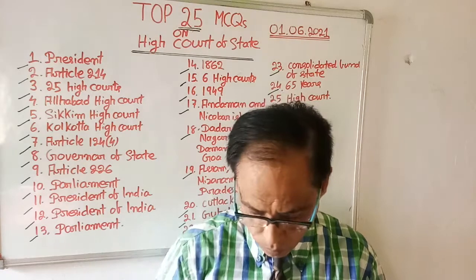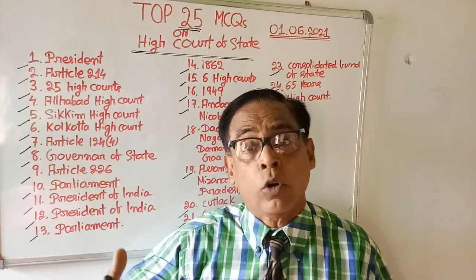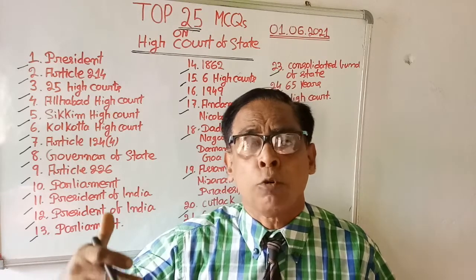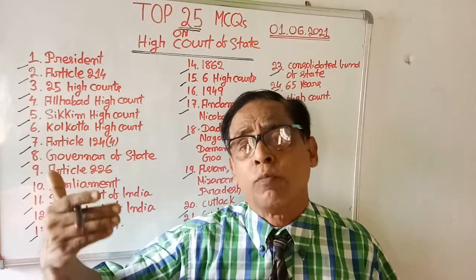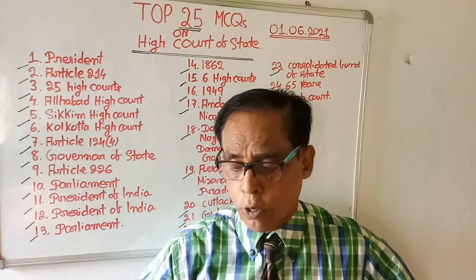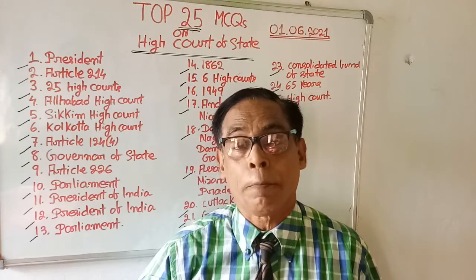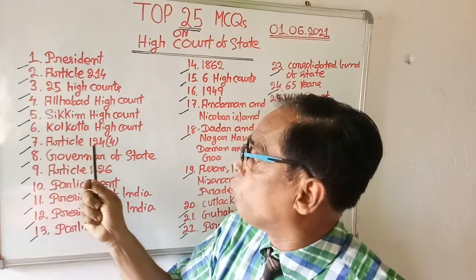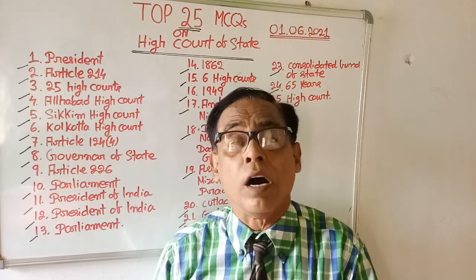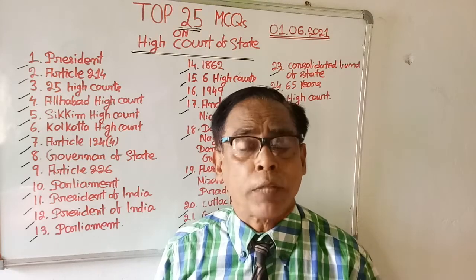Question number seven: the removal process of High Court judges is mentioned in which article? Judges of the High Court can be impeached. Options are: Article 124(1), Article 124(4), Article 214(1), and Article 215(1). The right answer is Article 124(4) — Article 124(4) speaks about the manner of impeachment and removal process of the judges of the High Court.